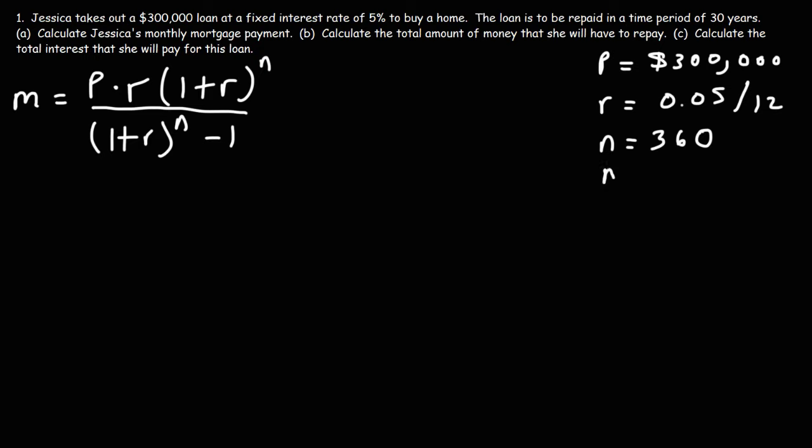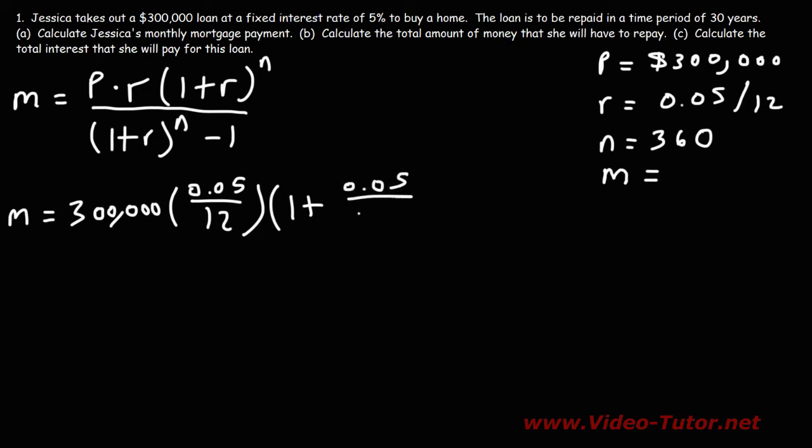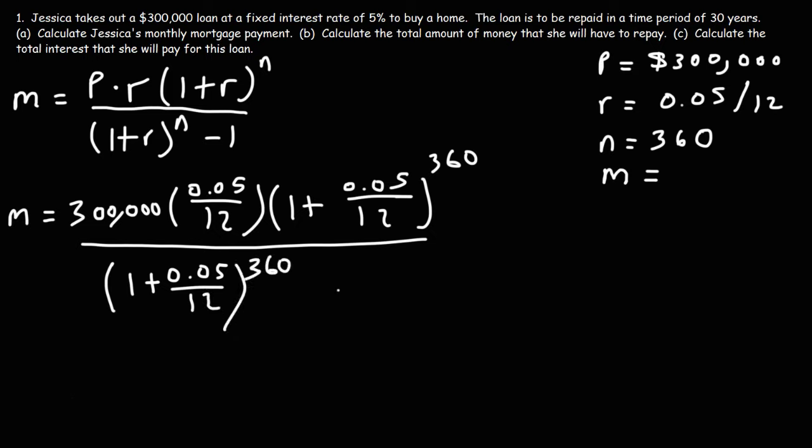The only thing that we need to calculate now is the monthly mortgage payment. So let's plug in everything into this formula. So P is 300,000. R is 0.05 divided by 12. And then it's going to be 1 plus 0.05 over 12, raised to the N. So we said that N is 360, divided by 1 plus 0.05, raised to the 12. I mean, divided by 12, rather. But raised to the N again. And then minus 1.